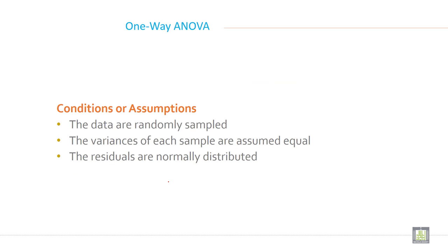There are three assumptions. The data are randomly sampled. If data are randomly sampled, then you can apply an analysis of variance. The variances of each sample are assumed equal and the residuals are normally distributed.